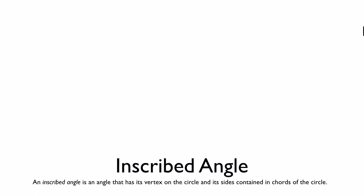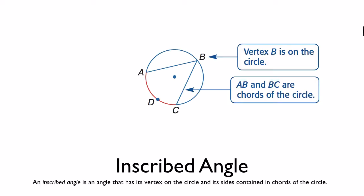To begin, we need to understand what an inscribed angle is. An inscribed angle is an angle that has its vertex on the circle, and the sides of the angle are contained in chords of the circle. A chord is a line segment that has its endpoints on the circle.